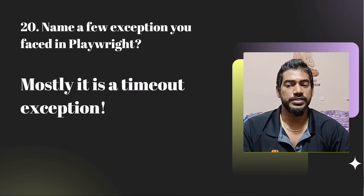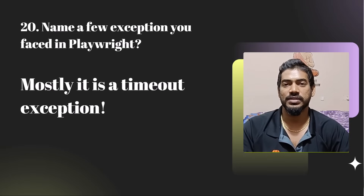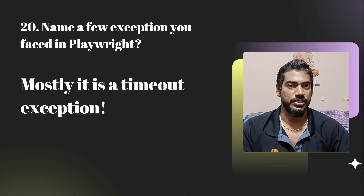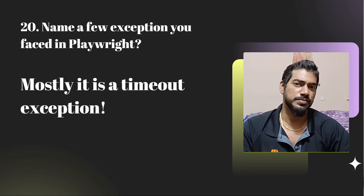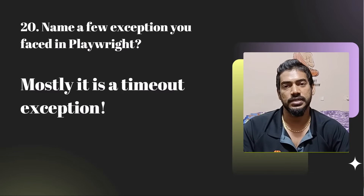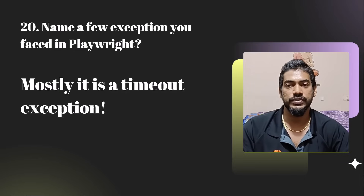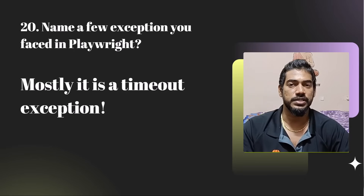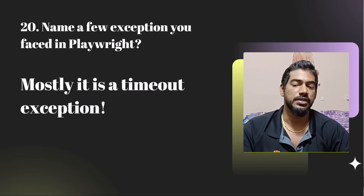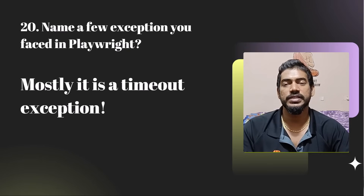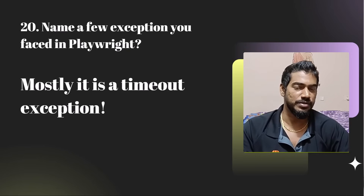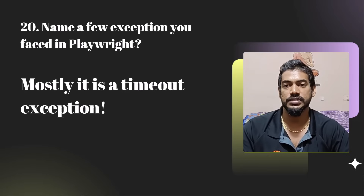Name a few exceptions you've faced in Playwright. In Playwright there's mainly one I've noted: the Playwright timeout exception. The exception is always timeout but the message is different. For example, strict mode violation — when you use the locator function and there are duplicates you get a strict mode violation error. If an assertion fails it also shows as timeout. The exception name is always timeout exception but the message will differ.